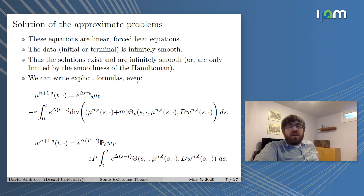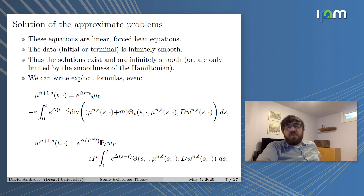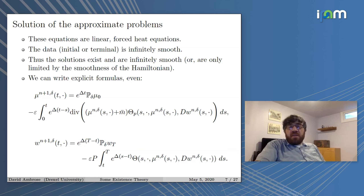If you want to be very specific, you can write down exactly what the iterates are. Mu^{n+1,delta} is given by the Duhamel formula applied to the nth iterates: the semigroup applied to the data, plus the Duhamel integral with the semigroup applied to the nth iterates. Similarly for W — using the Duhamel formula backward in time, with the terminal data W_T and the semigroup applied to things at the nth iterates.